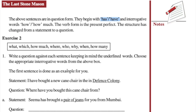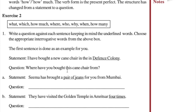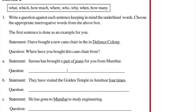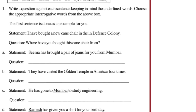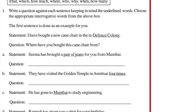Now in exercise 2 you are given question words: what, which, how much, where, who, why, when, how many. Their meanings are: what — kya, which — konsa, how much — kitna, where — kaha, who — korn, why — kyu, when — kub, how many — kitne. The difference between how many and how much: how much is used with uncountable nouns and how many is used with countable nouns.